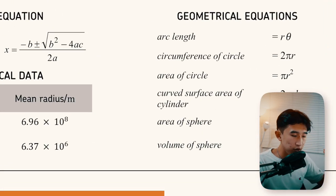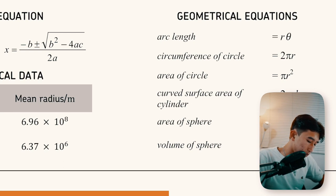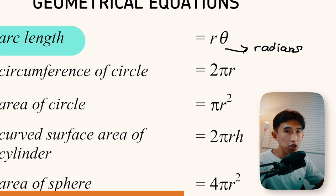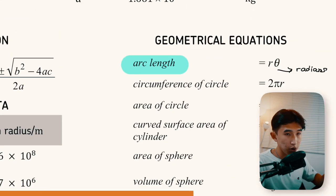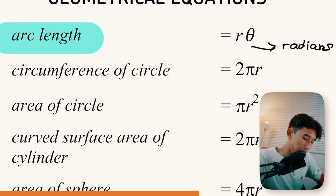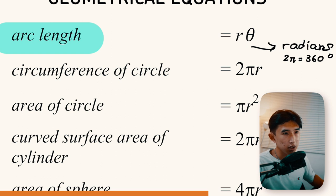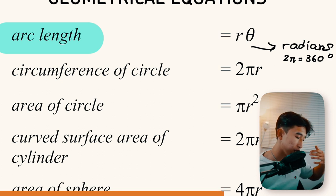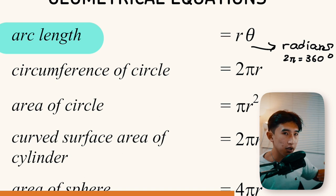Geometric equations can confuse a lot of students, especially the arc length equation — the theta in that equation must be given in radians. Radians are an alternative measure of angles, covered at the start of year one when dealing with phase difference, or in year two when doing angular speed and circular motion. Two pi equals 360 degrees. Circumference of a circle can appear in resistivity questions where a wire is looped around a cylinder.